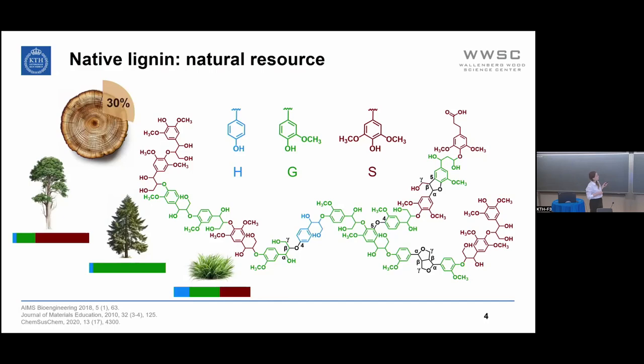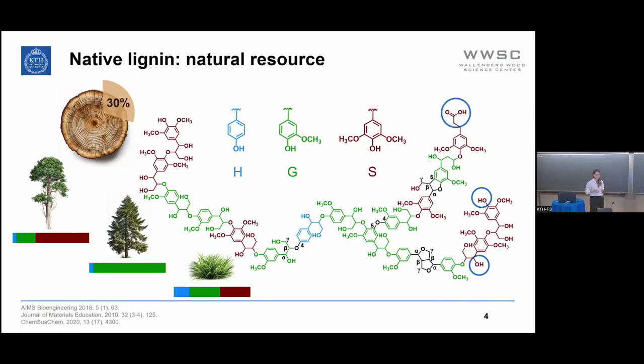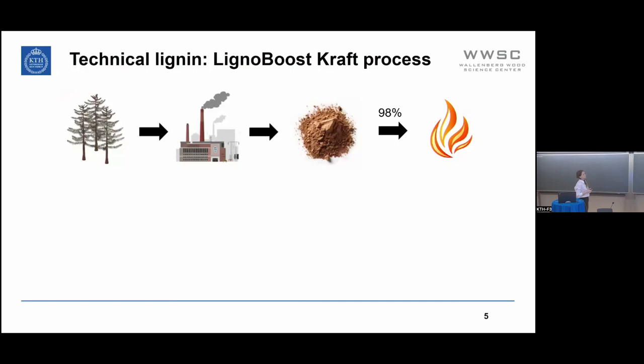For example, in softwood, lignin is mainly composed of G units, while hardwood and grass contain all three types. This is how native lignin looks more or less. In order to isolate this lignin, we can apply different methods, and from that we get technical lignin, which is a completely new kind of lignin.